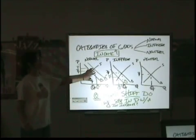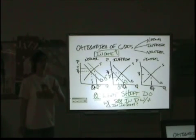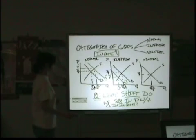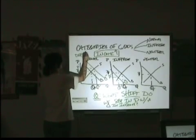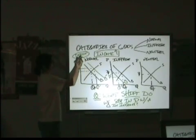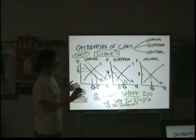So you see opposites here. With a normal good, you have a direct relationship between income and demand. That means as income increases, demand increases, they move in the same direction. Direct, same direction.